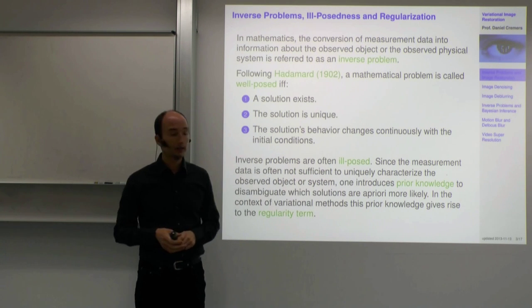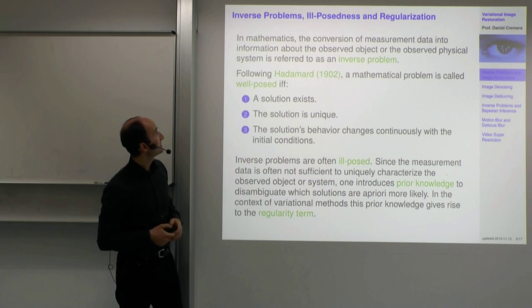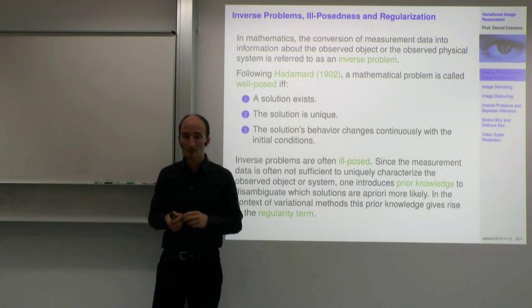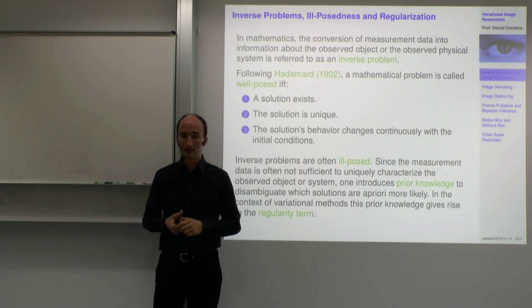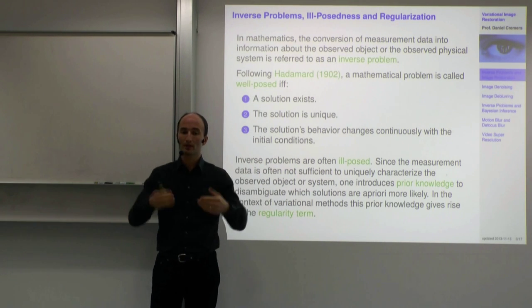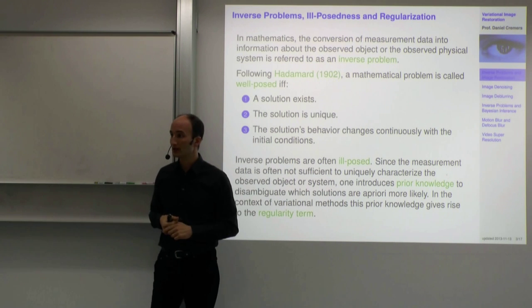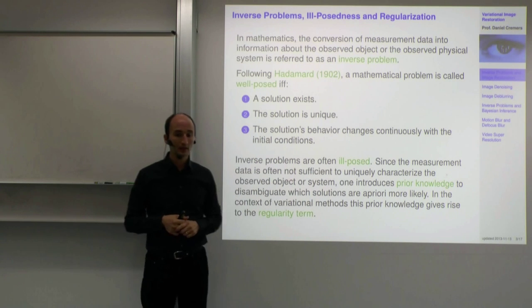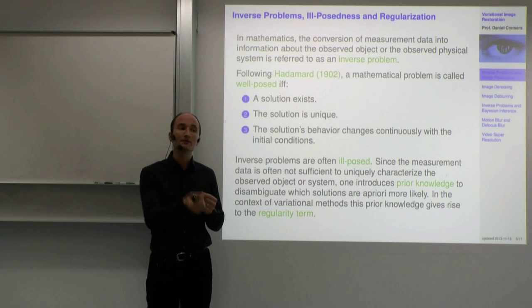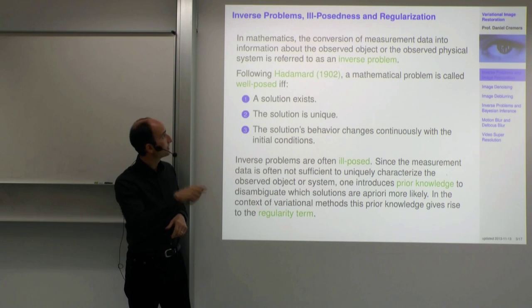Inverse problems have a long history — it is a very central, important problem in applied mathematics. An inverse problem is the conversion of measurement data into some information about the observed object or the observed physical system. You have some system or object, you take measurements, and you want to infer some property of the object. This is called an inverse problem, sometimes also called a problem of inference.